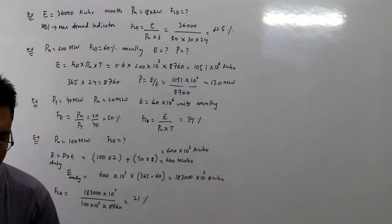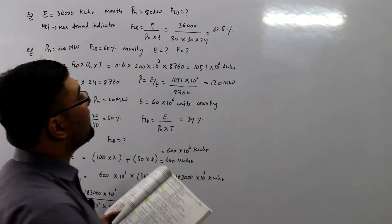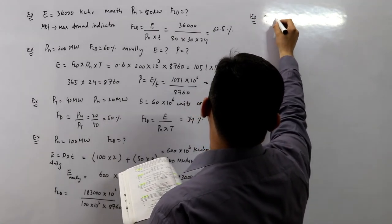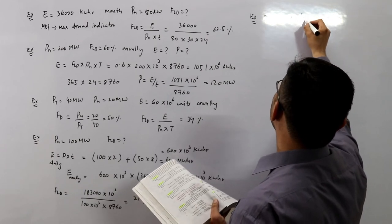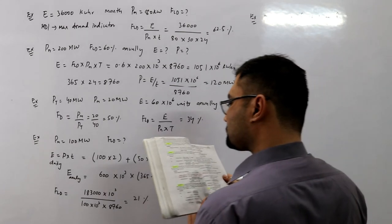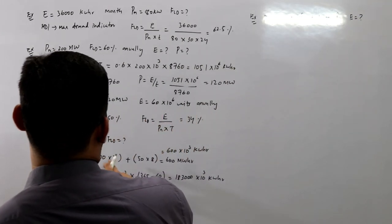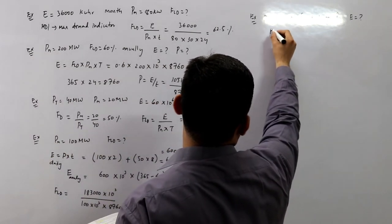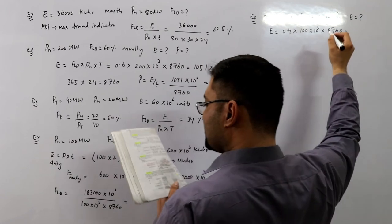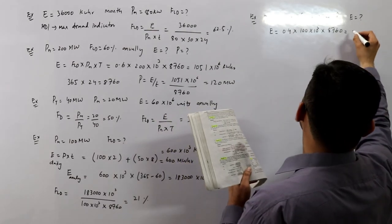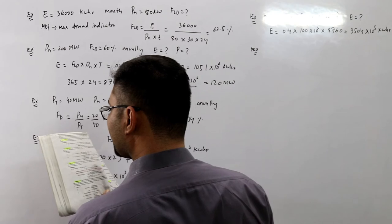From the book: a power station has a maximum demand of 100 megawatts and annual load factor of 40 percent. Calculate the total energy generated in the year. e = fld × pm × t = 0.4 × 100 × 10³ × 8760 = 3504 × 10⁵ kilowatt hours.